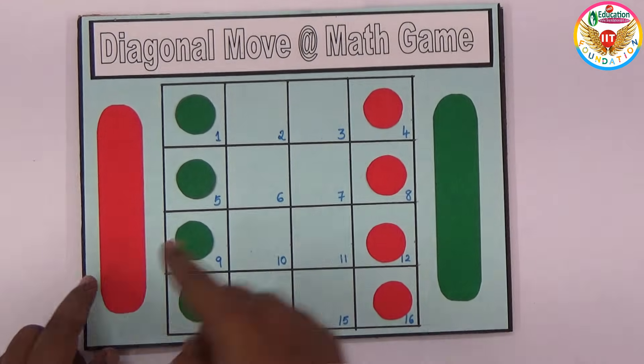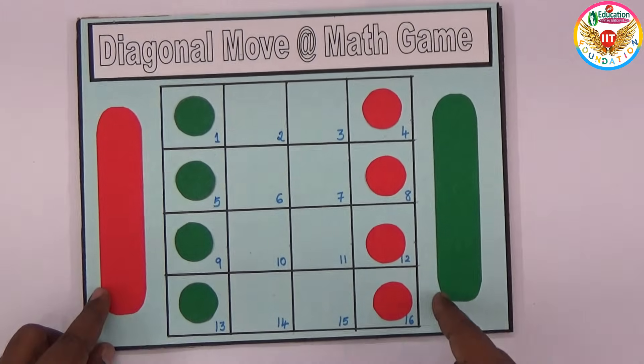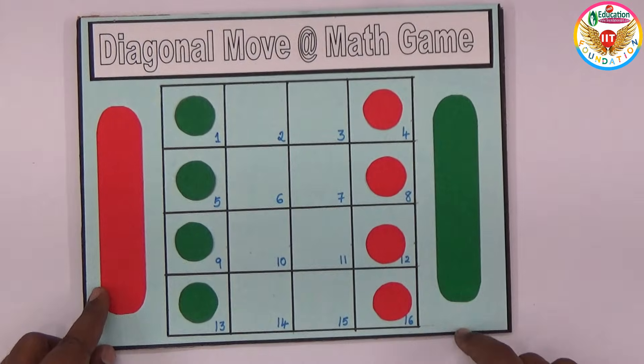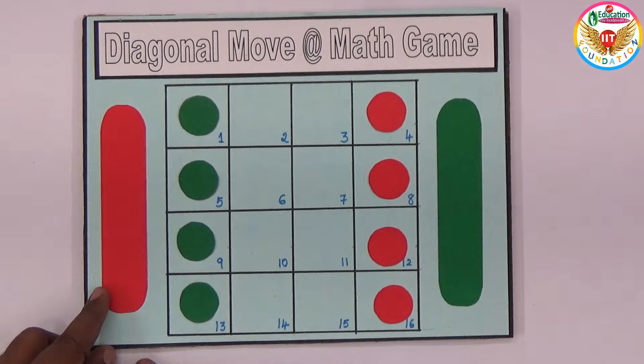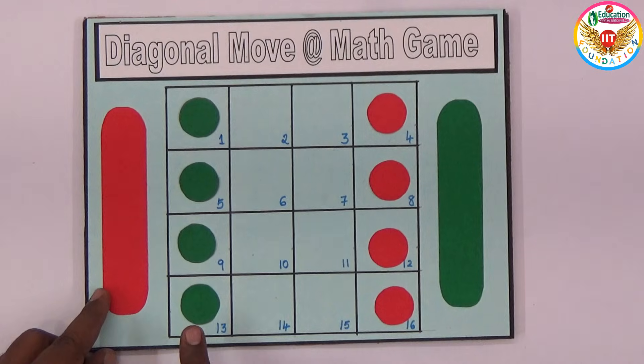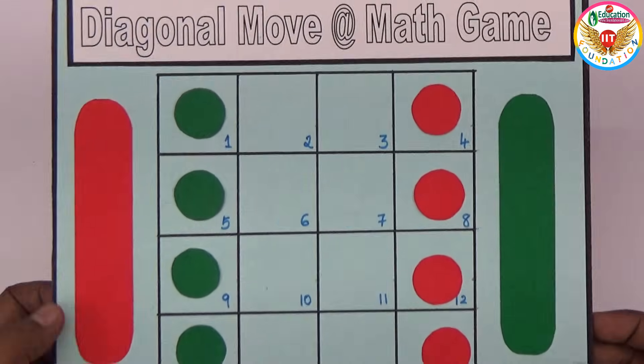All four pieces should come to this place and these four should come to the other side. The red four circular pieces should come to this side and the four green circular pieces should come to this side.